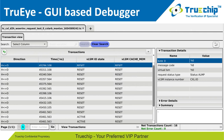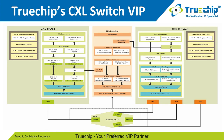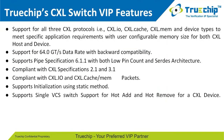Here we have the architectural block diagram of the Trochip CXL switch VIP, showing one CXL switch upstream port and three CXL switch downstream ports. Trochip VIP supports a large number of CXL switch downstream ports as per customer requirements. Trochip VIP supports all three CXL protocols — CXL.IO, Cache, and Mem — and all device types. It supports 64 GT/s data rate with backward compatibility and PCIe spec 6.1.1 with both low pin count and standard architecture. The switch VIP is compliant with CXL 2.1 and 3.1, and supports CXL.IO and CXL.Cache/Mem methods, initialization using the static method, and single VCS switch support for hot add and hot remove for a CXL device.